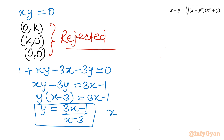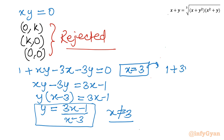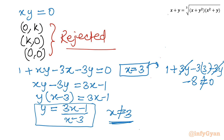To verify x ≠ 3: if we substitute x = 3 into the original bracket equation we get 1 + 3y − 9 − 3y = 0, which gives −8 = 0 — a contradiction. So x cannot equal 3, and we can safely divide both sides by (x − 3), giving y = (3x − 1) / (x − 3).